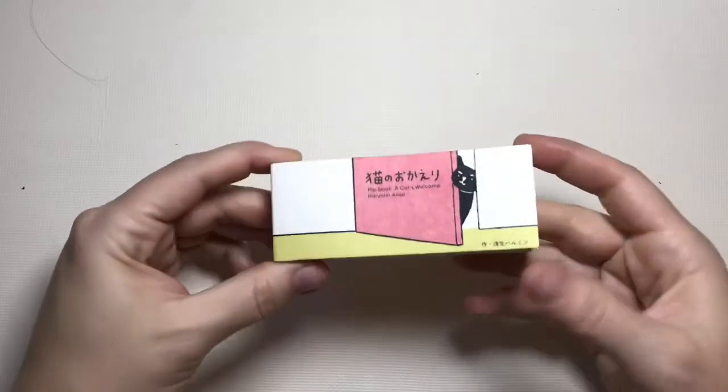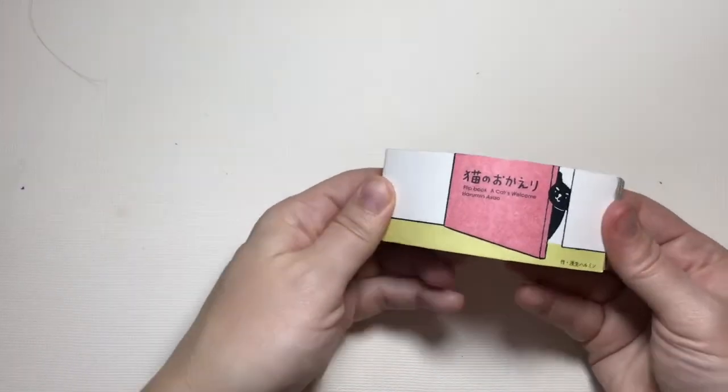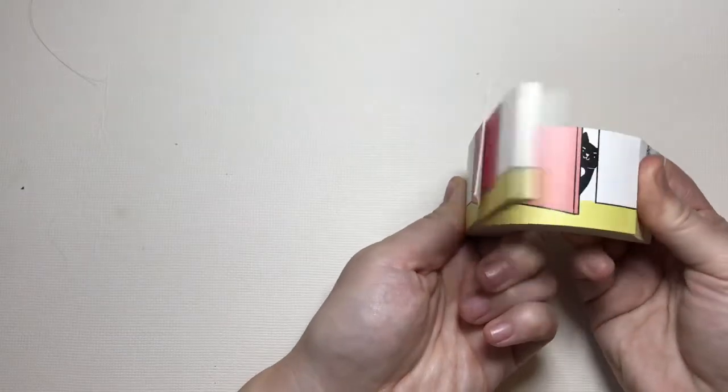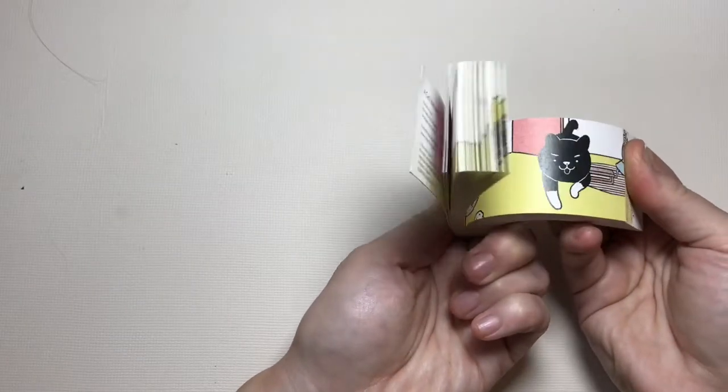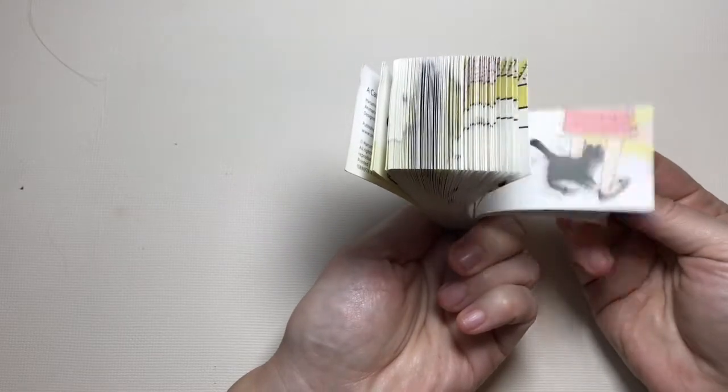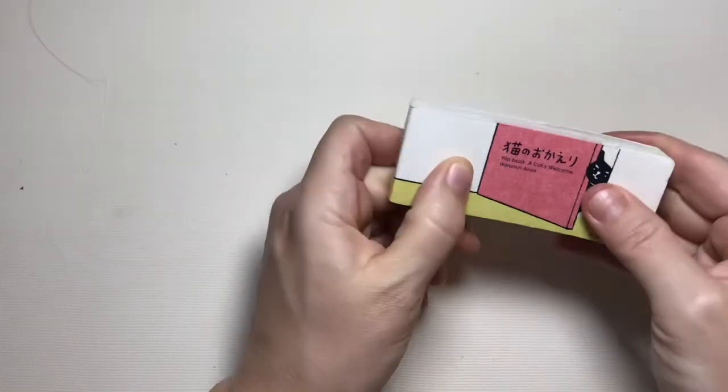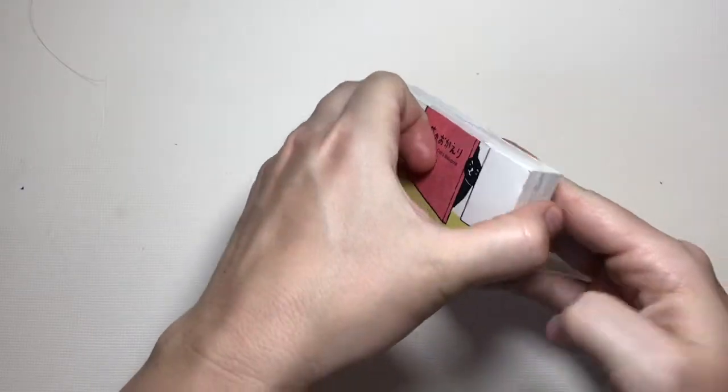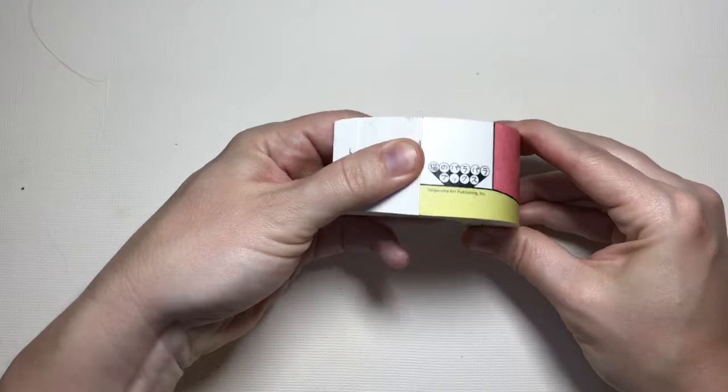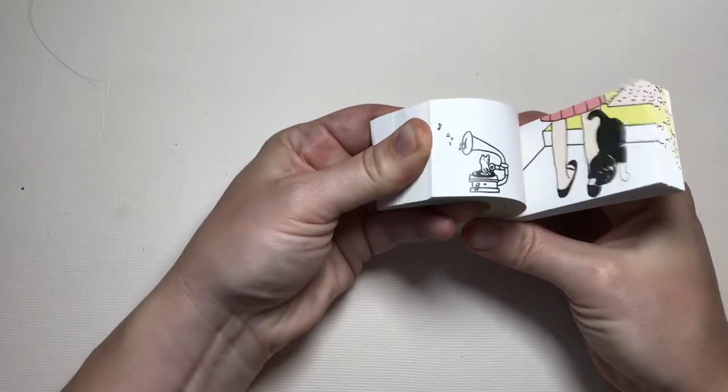It's the same idea behind this professionally published flip book called A Cat's Welcome. When I flip the pages of this book quickly I see a cat coming through an apartment and running to its owner's legs. So cute. It's very thick paper and a thick book and it does take some practice to get your thumb to flip the pages.